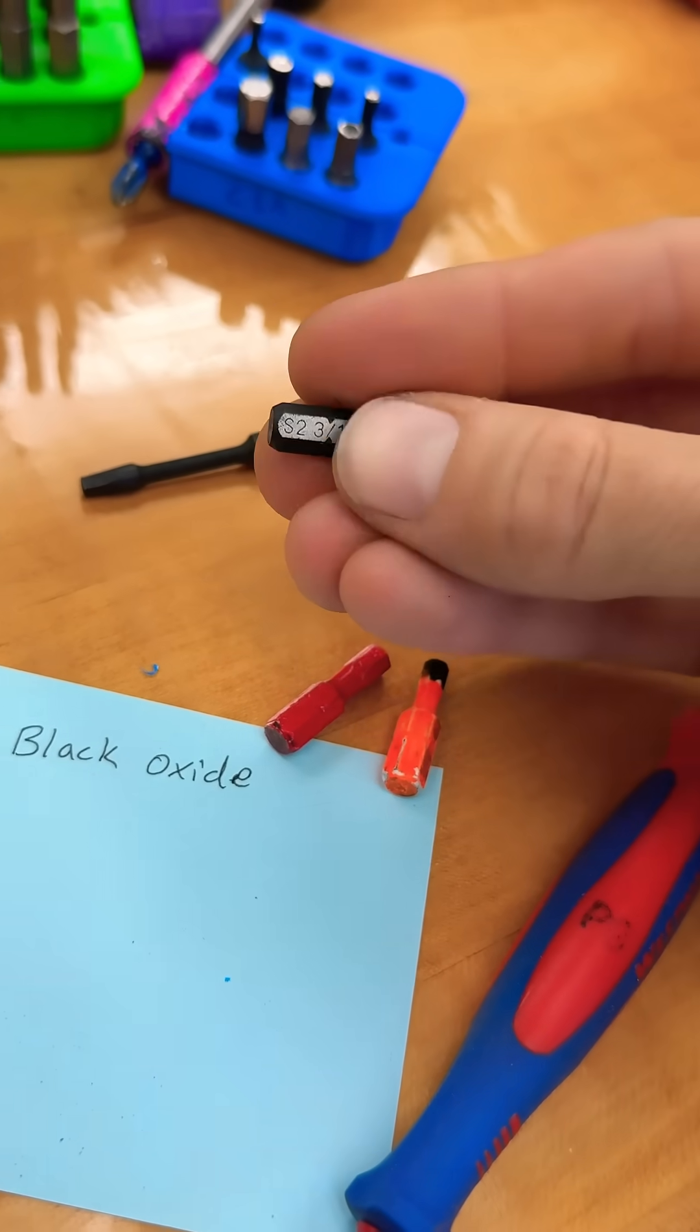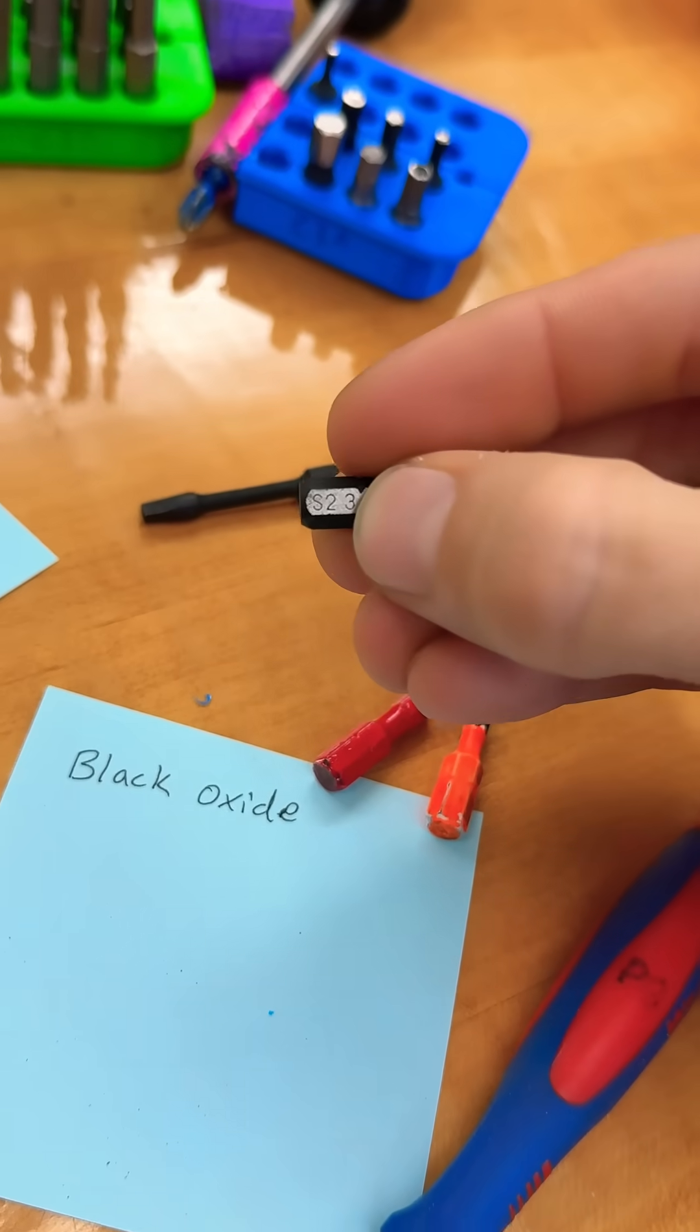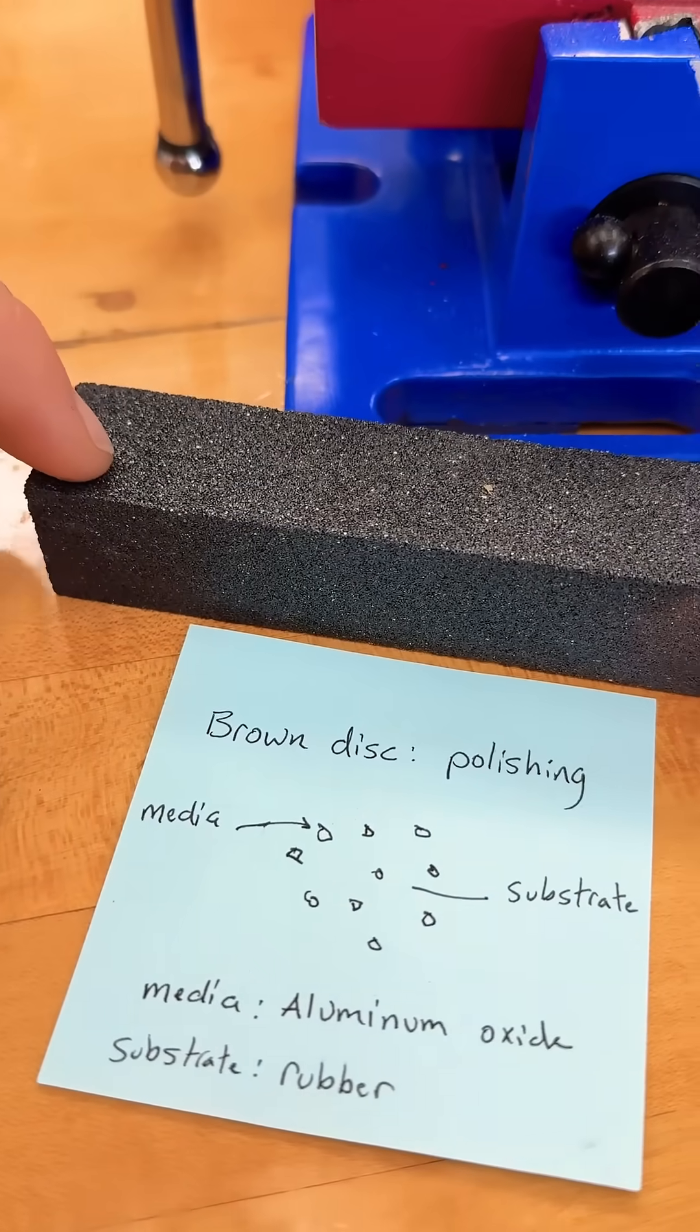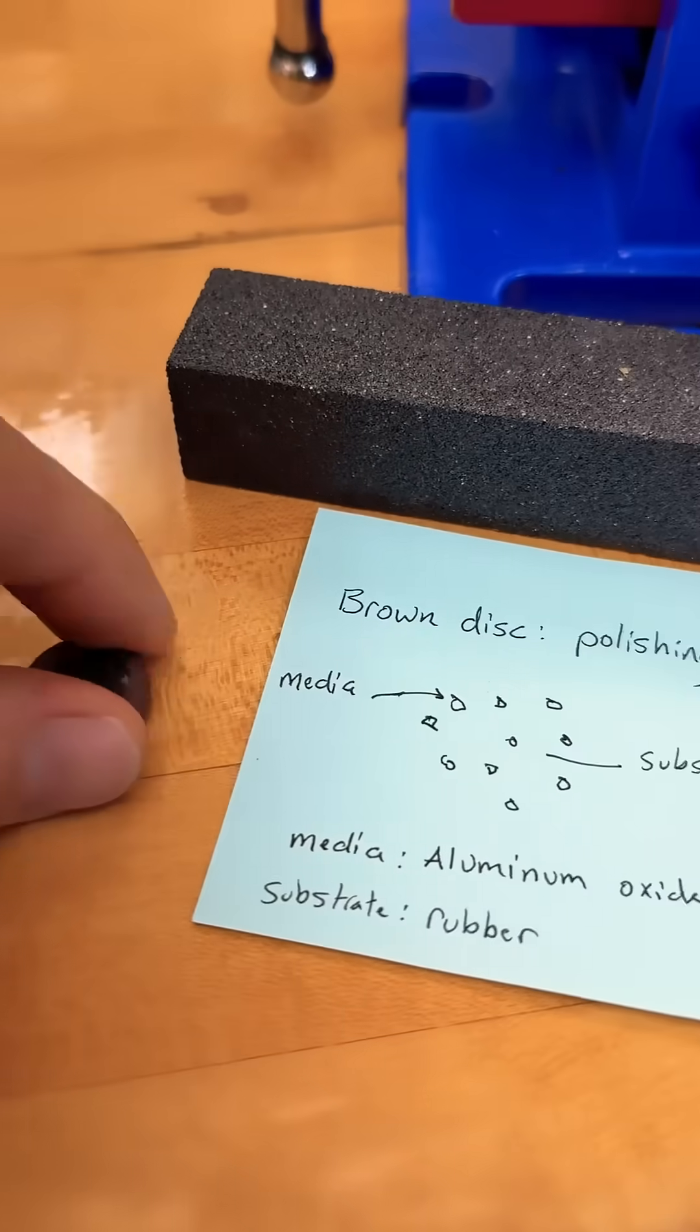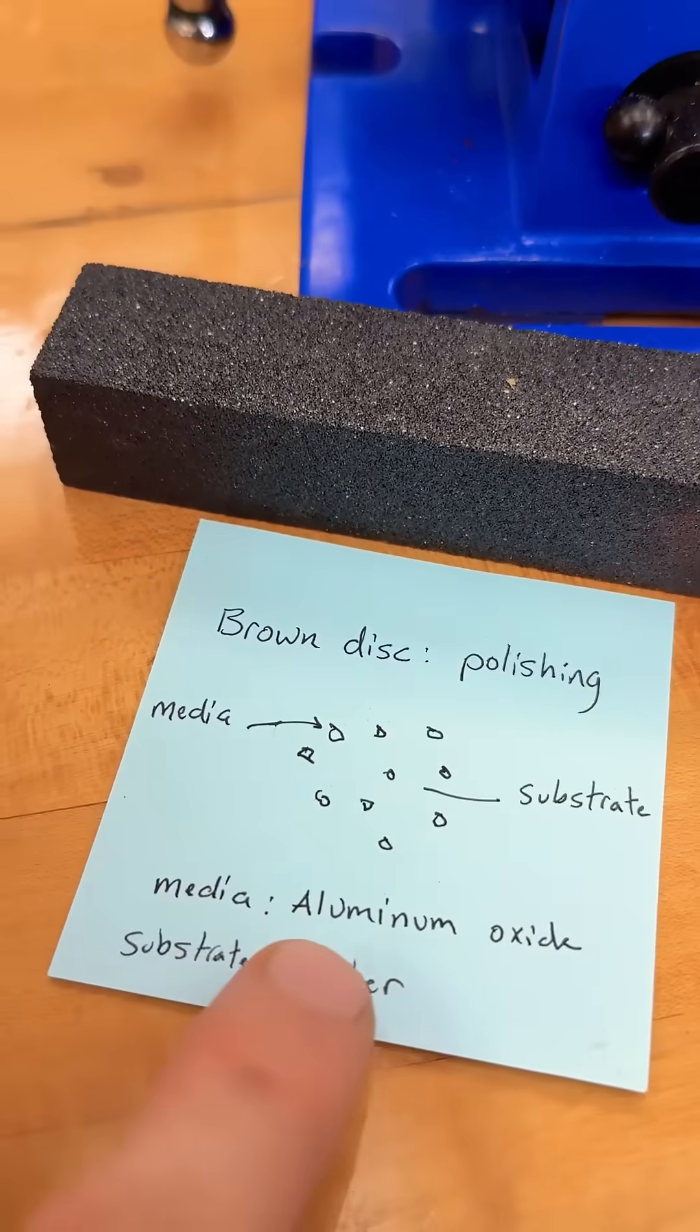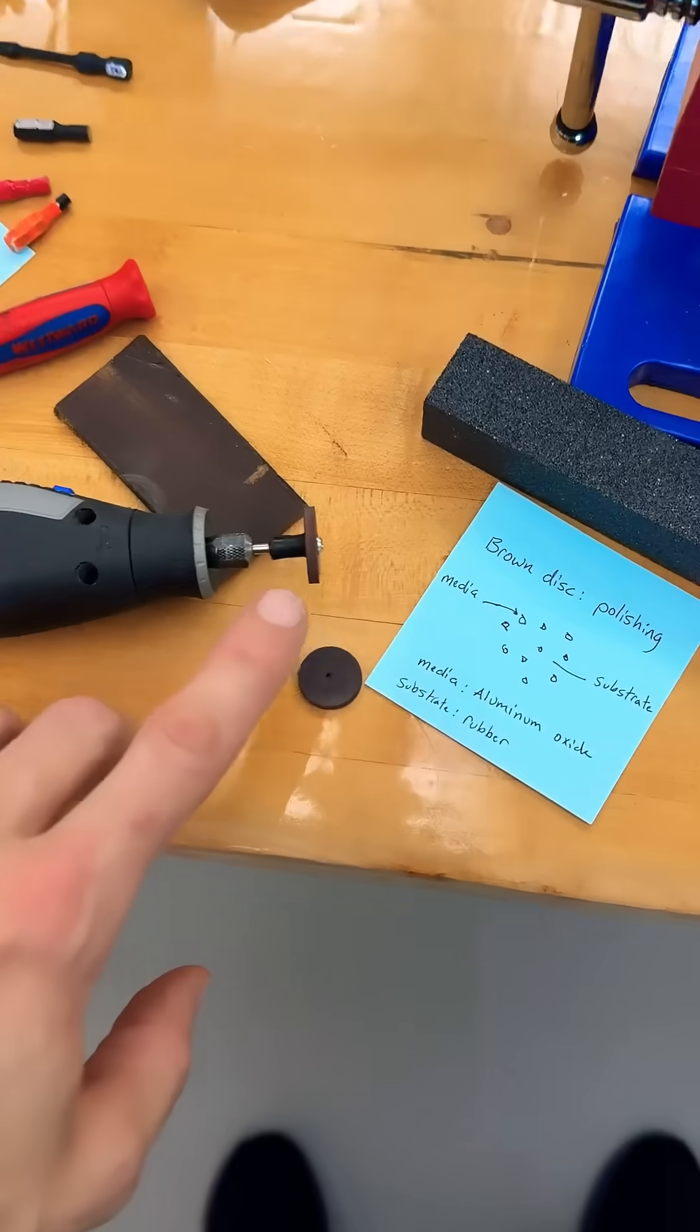This grinding stone is made of aluminum oxide, and this rubber disc is made of rubber substrate with media inside of it, also aluminum oxide. So I mount this disc on the Dremel.